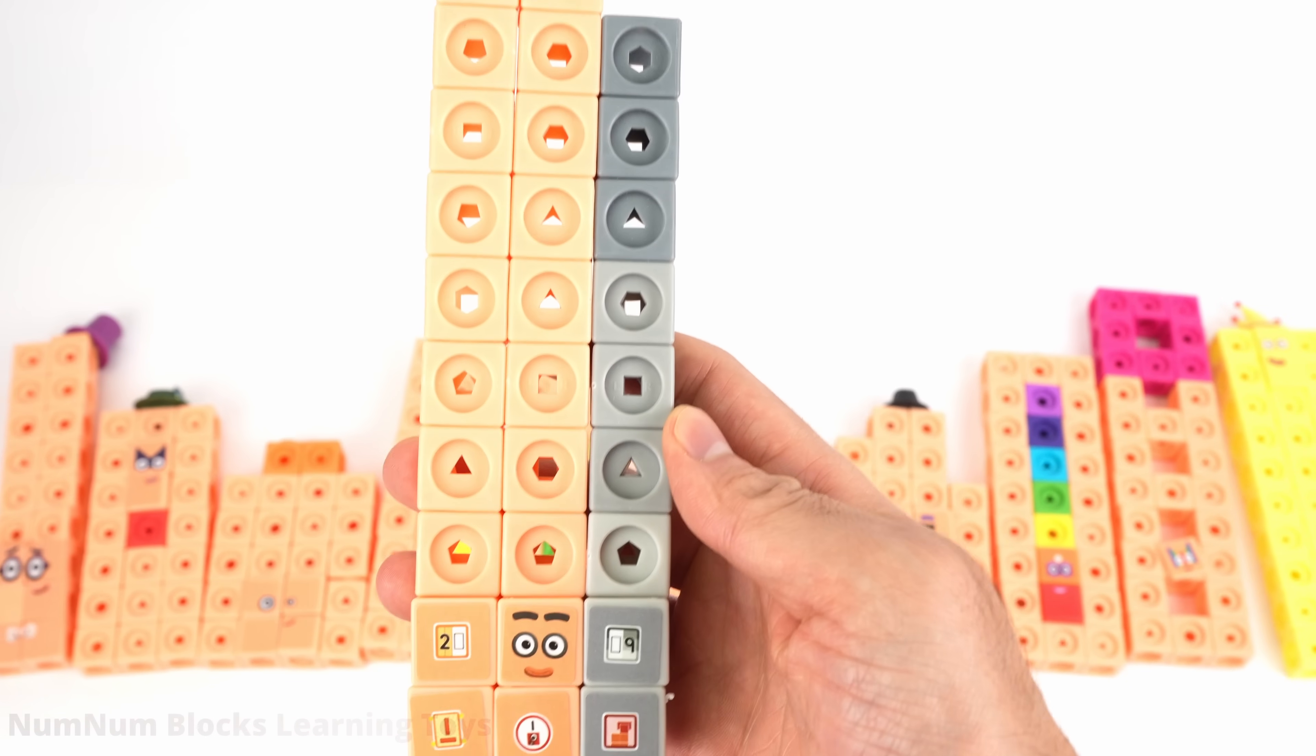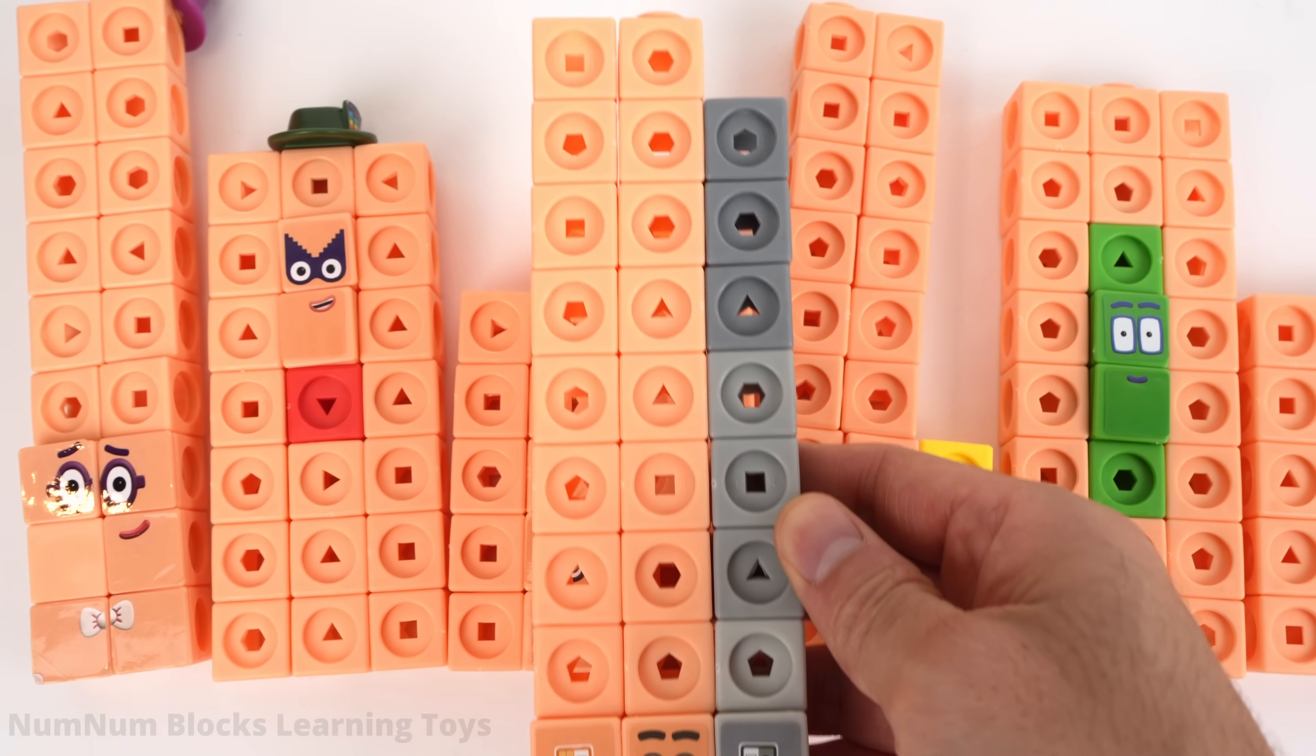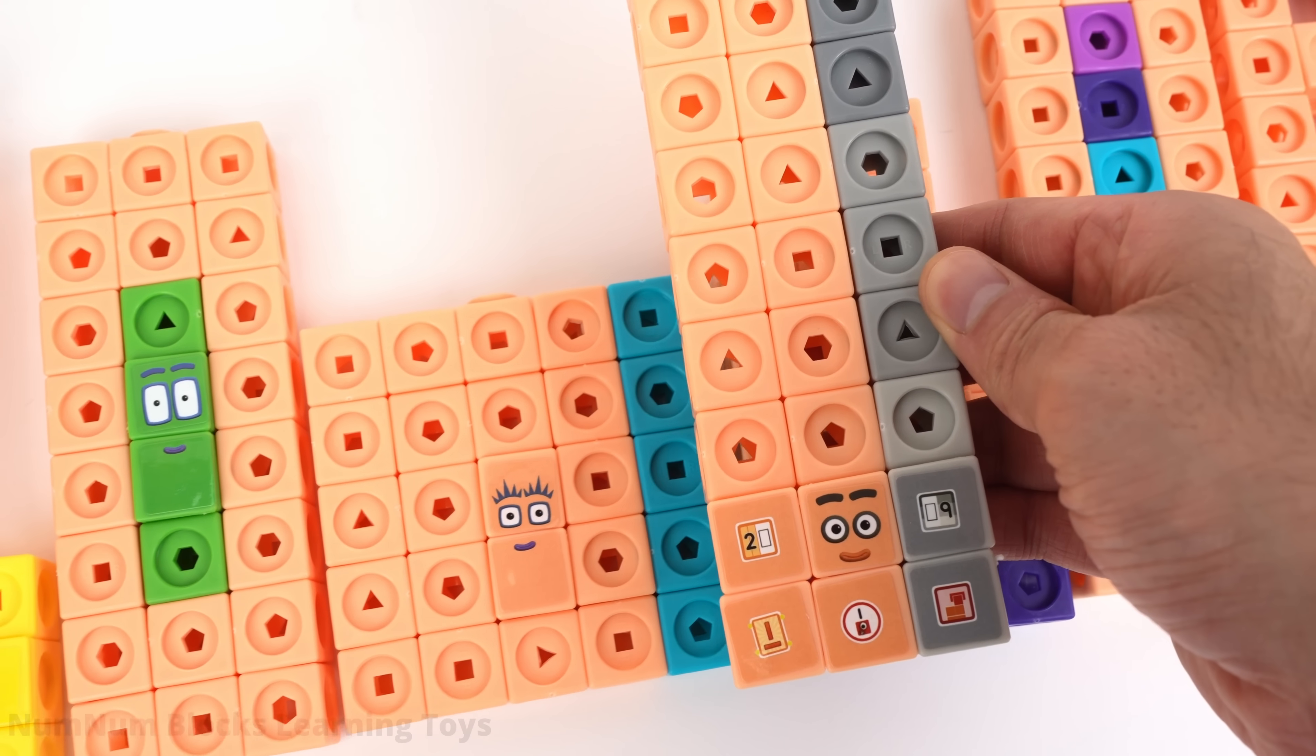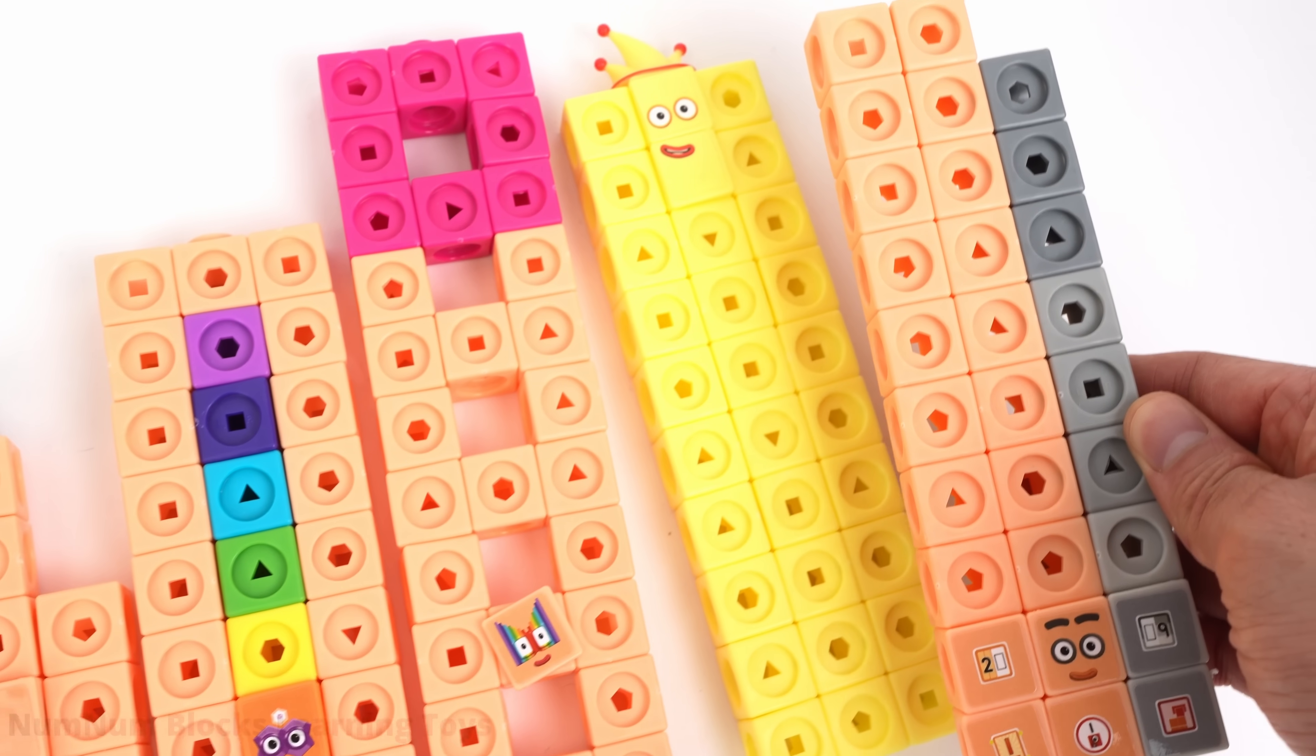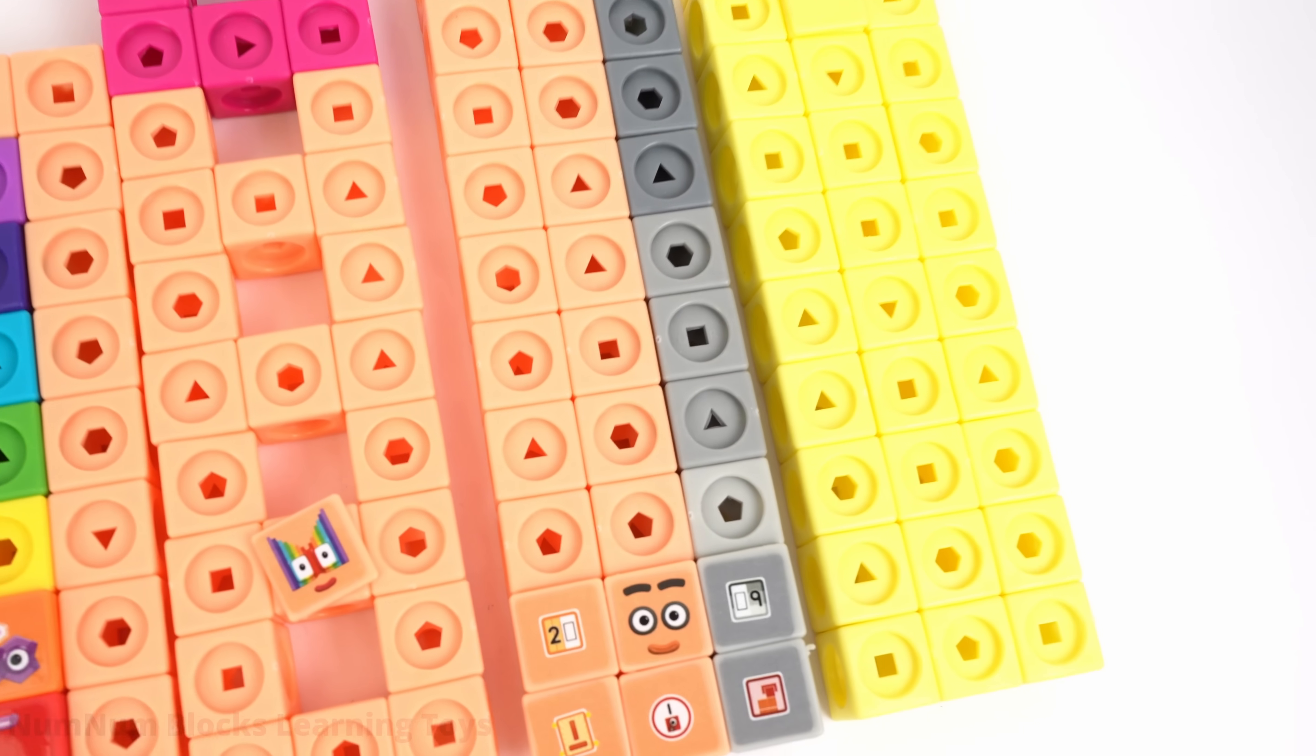What number comes after 29? 30. Let's look for 30. There's 30 at the very end. 29 is one less than 30.